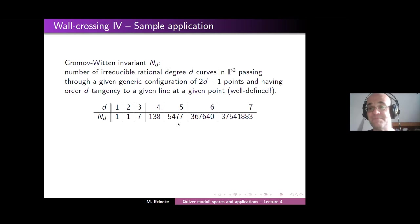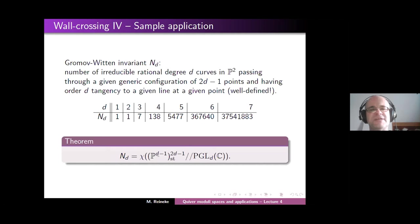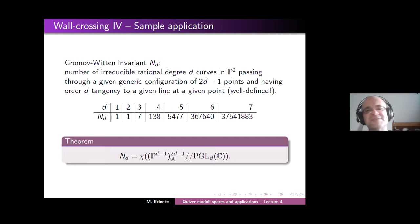Back to quiver moduli. As one application of all this wall-crossing formulas, here's a theorem: this very difficult number — the count of rational degree-d curves — is given by a very simple geometric invariant, namely chi, the topological Euler characteristic of the moduli space of (2d-1) points in projective space of dimension (d-1). This is one of the moduli spaces for the subspace quiver, and the Euler characteristic of this innocent-looking space knows these difficult Gromov-Witten invariants.